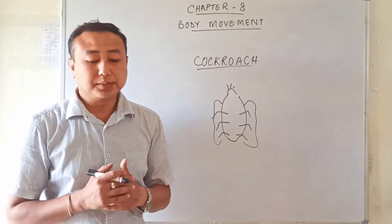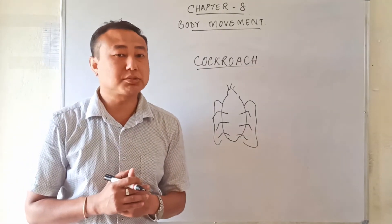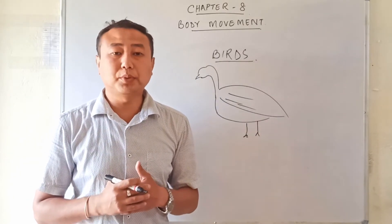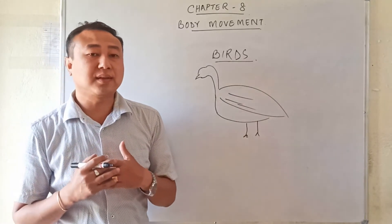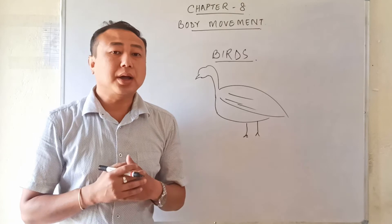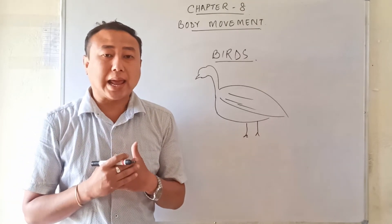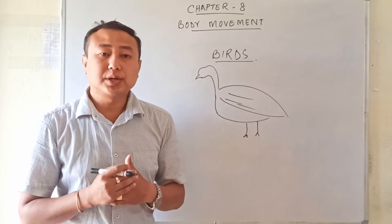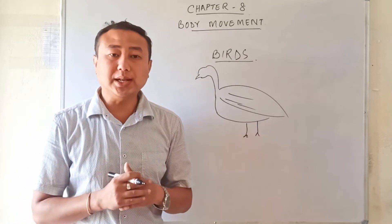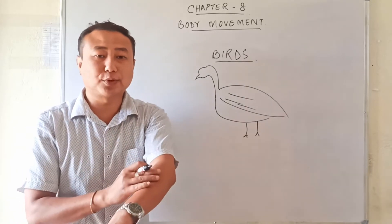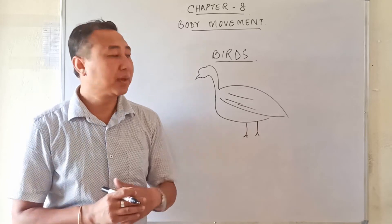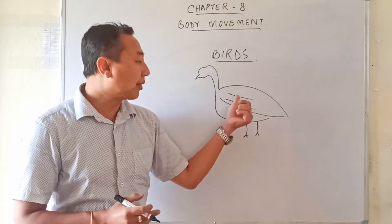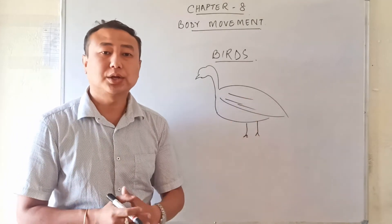Now let us see about the movement caused in birds. Birds have developed certain adaptations in their body so that they can fly. The forelimbs — meaning the front limbs or hands — in case of birds, the hindlimb is present as the leg itself while the forelimb is modified into wings for flying.